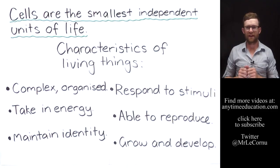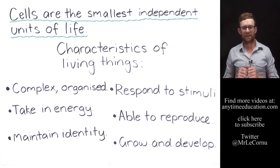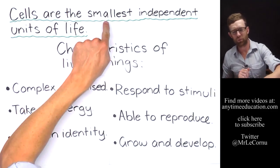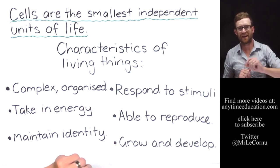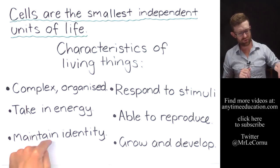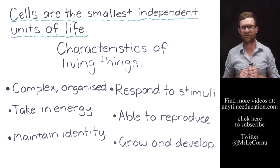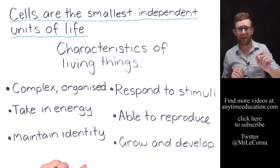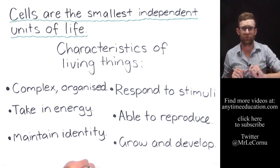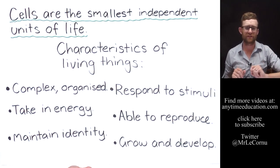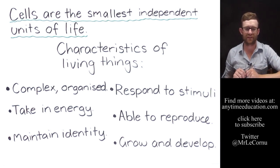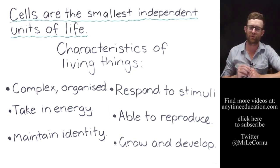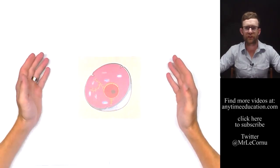Cells are the smallest possible independent units of life, so they are able to meet all six of these characteristics of living things. But if we went any smaller than a cell and looked at something inside of a cell, they would not be able to meet these six characteristics, and that's why we say that cells are the smallest independent units of life.